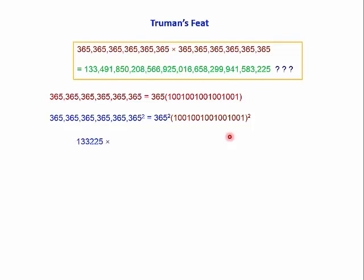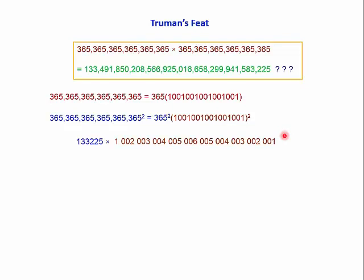To square a number ending in five: for 365 squared, you multiply 36 by the number after it and put 25 on the end. We just did 36 times 37 on the previous slide — that's 1332 — so 365 squared is 133225. To square 111111, that number squared is 12345654321. Because we've got zeros in — in little triplets — it works out accordingly.